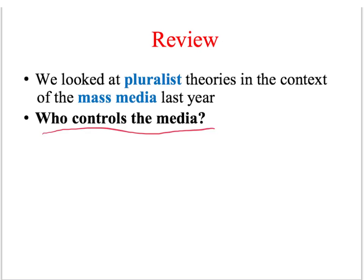Marxists argue that the state is largely under the control of the capitalist class, whereas the pluralist perspective argues that ultimately the state within a democracy is under the control of the people — it's under the control of the electorate.